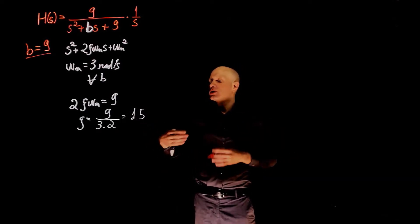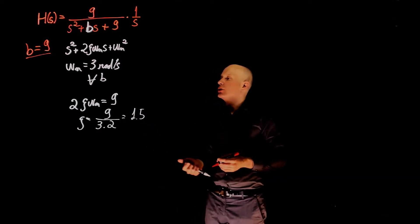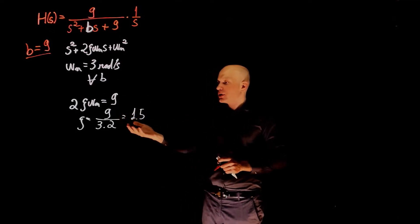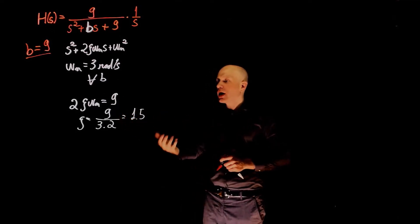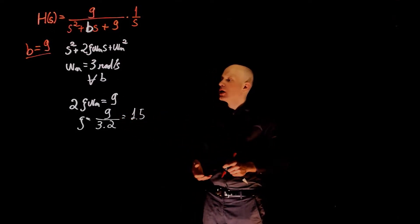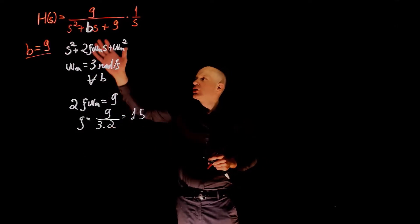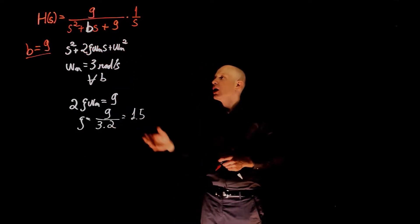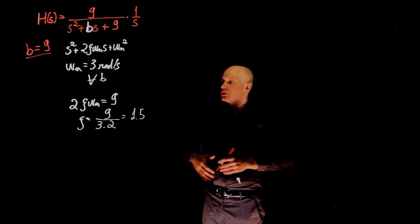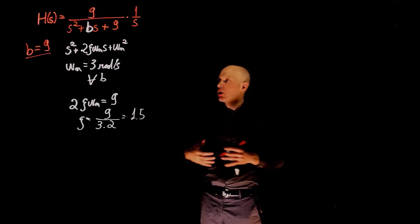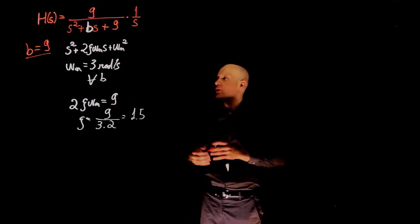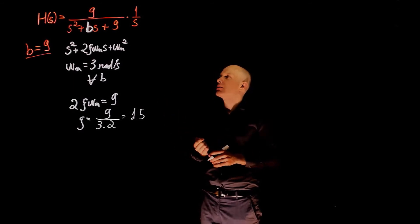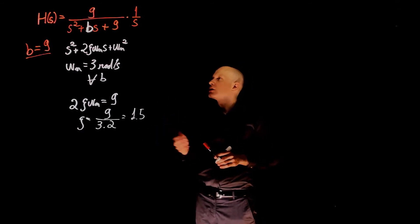The damping ratio is greater than 1, which means that when you take the inverse Laplace of this transfer function, you will only have exponential components. That's because the roots — the poles of this transfer function — are real numbers and distinct. Both roots are real and distinct. Let's take the inverse Laplace to verify this statement.